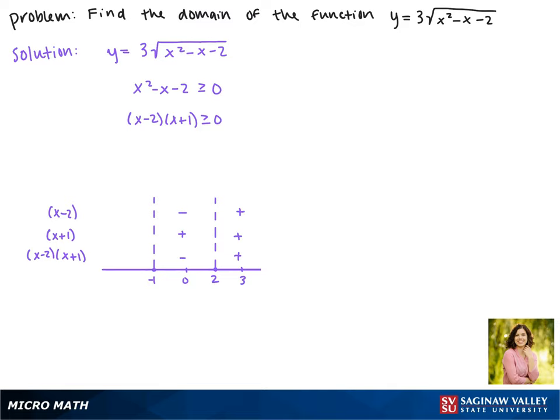Now we have to check something smaller than negative 1 like negative 2. It will make our first binomial negative. Our second binomial will also be negative, and then their product, negative times a negative, will be positive.